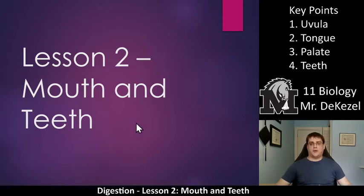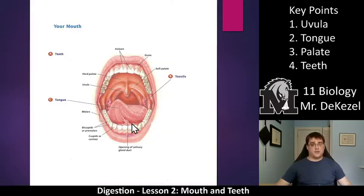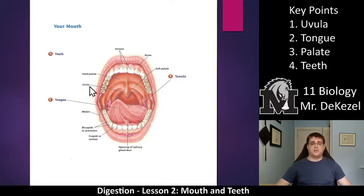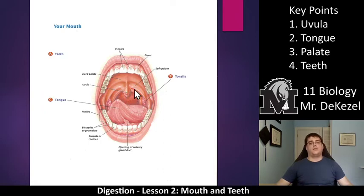Let's talk about them, but first we'll see the diagram. You have this diagram in your notes as well, and what we're going to talk about first of all is the uvula. It is the little dangly thing at the back of your throat. It really doesn't do too much. Sometimes it gets in the way, sometimes it can get infected, but that is the uvula, and we're going to talk about that first.